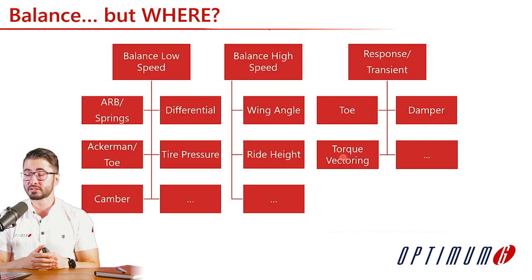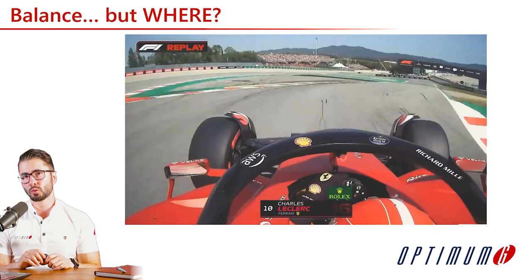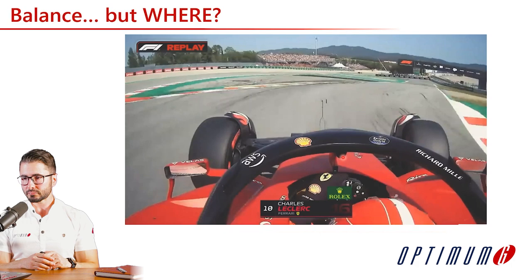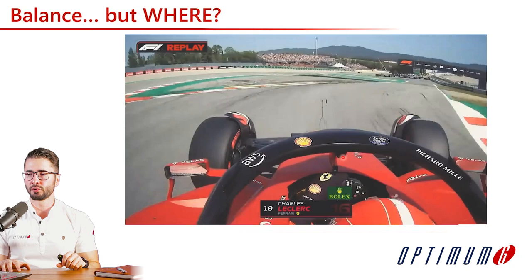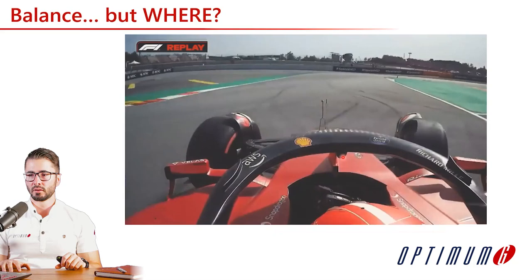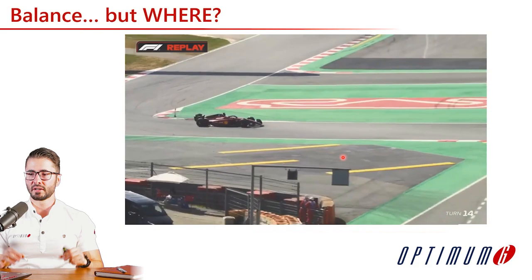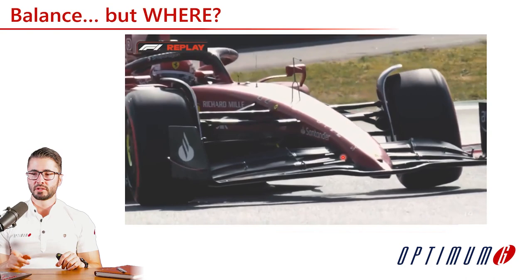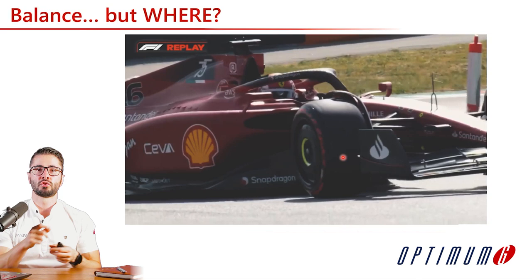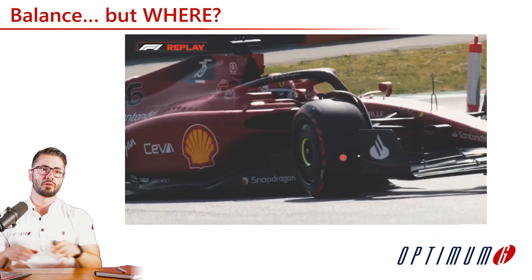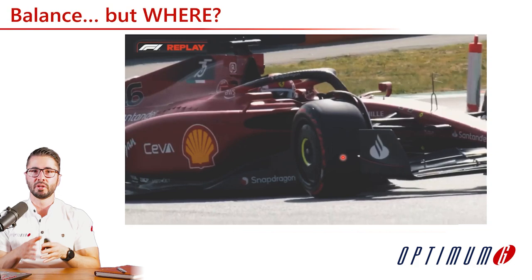Here is an example from professional motorsports — it would be interesting if you can find an example with your own onboard or data. The driver has balance issues, but we need to understand where, because this changes what we do with the car. Looking at the video: on first look you might think it is apex oversteer, but when the driver starts to steer, he gets oversteer and needs to apply a correction. This is not apex oversteer — it is corner entry or change-of-direction oversteer. Many Formula Student teams still need to focus on understanding this to make the right setup change calls.